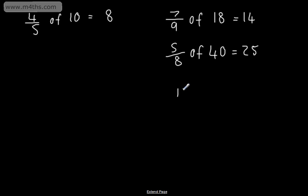Okay, let's look at 11 ninths of 90. So, this time we have a top heavy or improper fraction. 90 divided by 9 is 10. 11 times by 10 is 110.